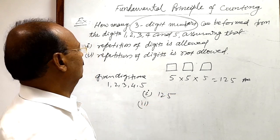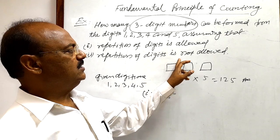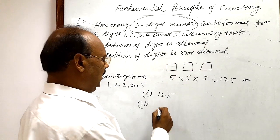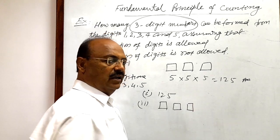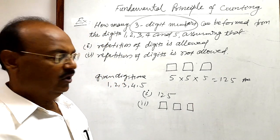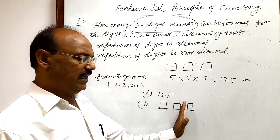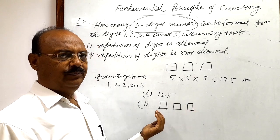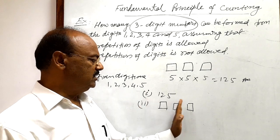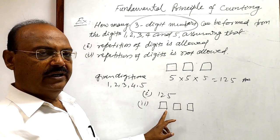Now let us consider the second part, when repetition of digits is not allowed. So again, we have to form three digit numbers, but in this case, repetition is not allowed. So if you move from this side, we can move from this side also, no problem. But if you move from this side, then this place can be filled in how many ways?